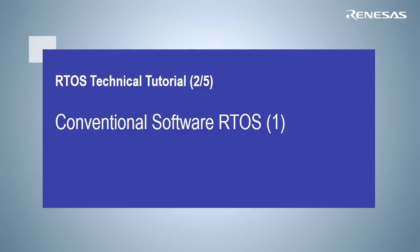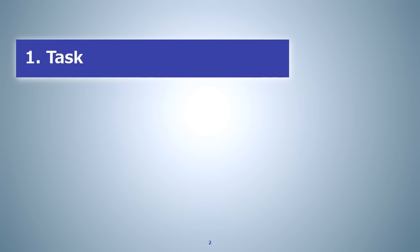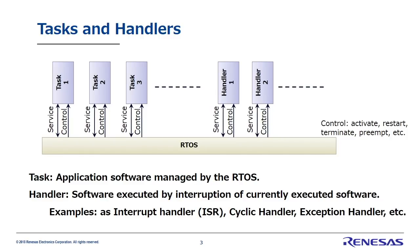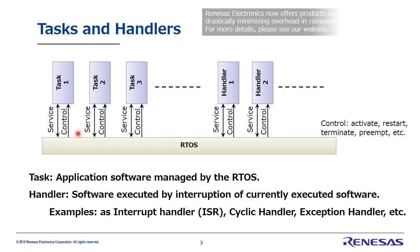In this section, we'll go over the technology in conventional software RTOS. To start with, let's go a little deeper into what tasks are. We offered a simple introduction to tasks in the last section, but to be more specific, tasks are simply what we call the software applications that an RTOS controls. The RTOS activates, reactivates, terminates, and preempts tasks. Also, tasks can utilize RTOS system calls. System calls are also referred to as APIs. From now on we will be referring to system calls as APIs.